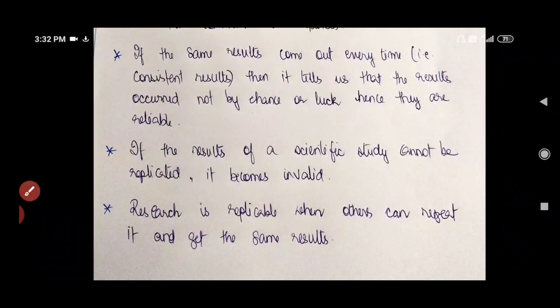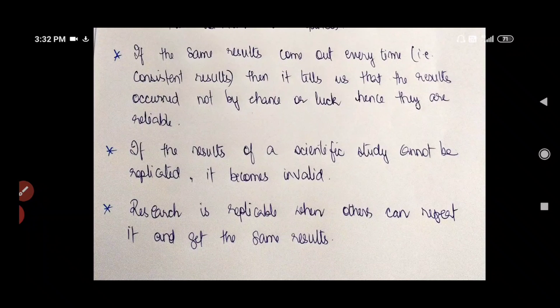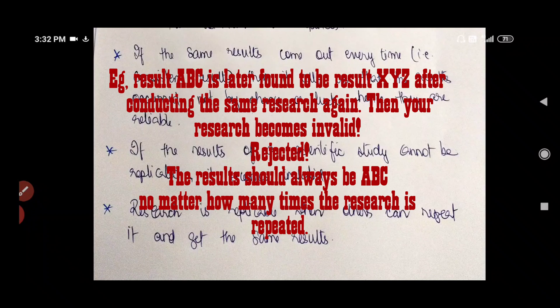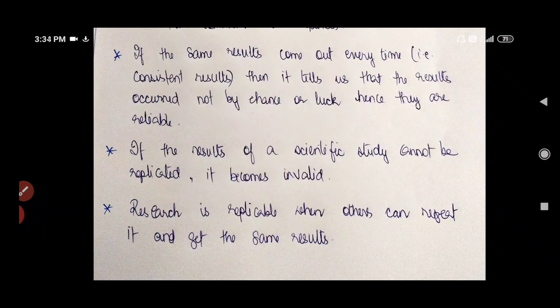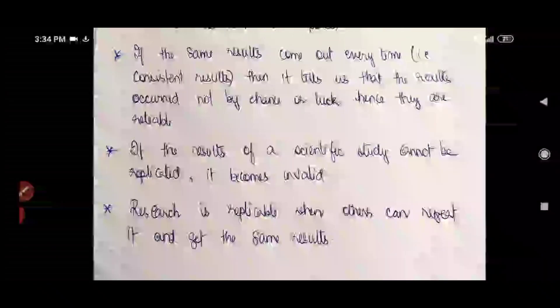If the results of a scientific study cannot be replicated, it becomes invalid. So let's say the results of your study five years ago produced something called ABC. Then after five years, the same research conducted produced something called XYZ. Then your research becomes invalid. So an important quality of scientific method is it should be replicable. So a research is replicable when others can repeat it and get the same results.